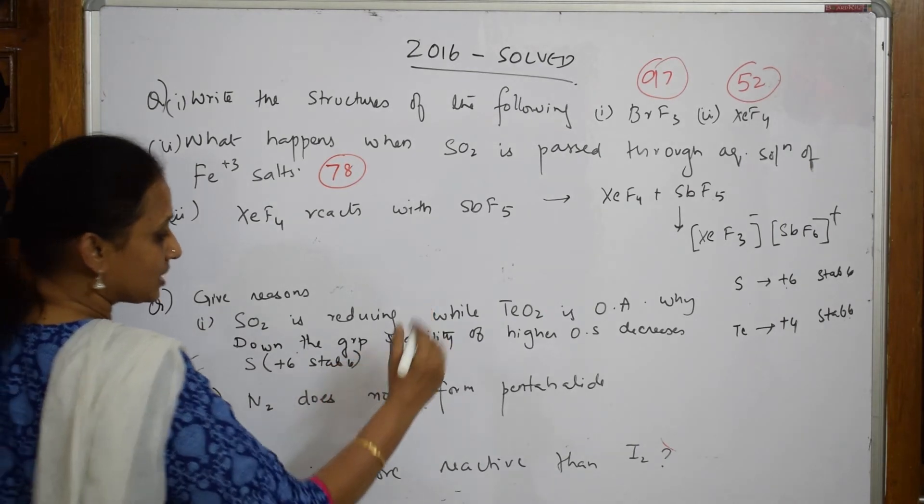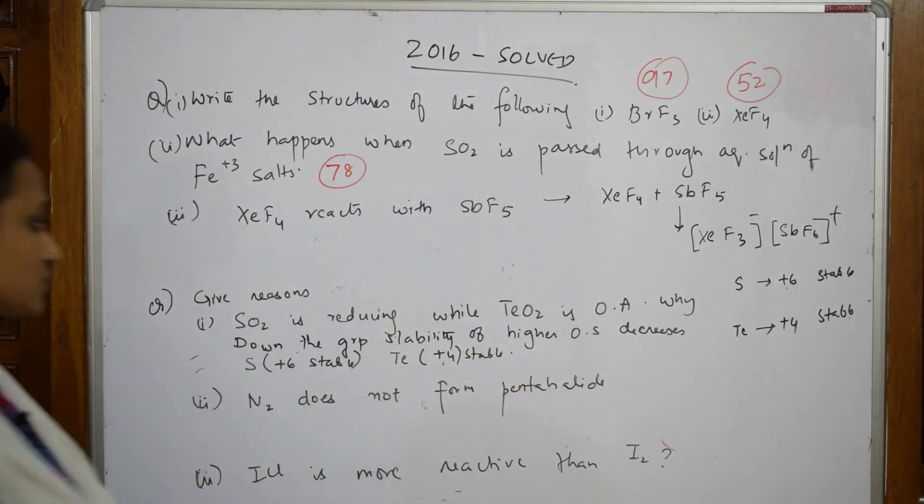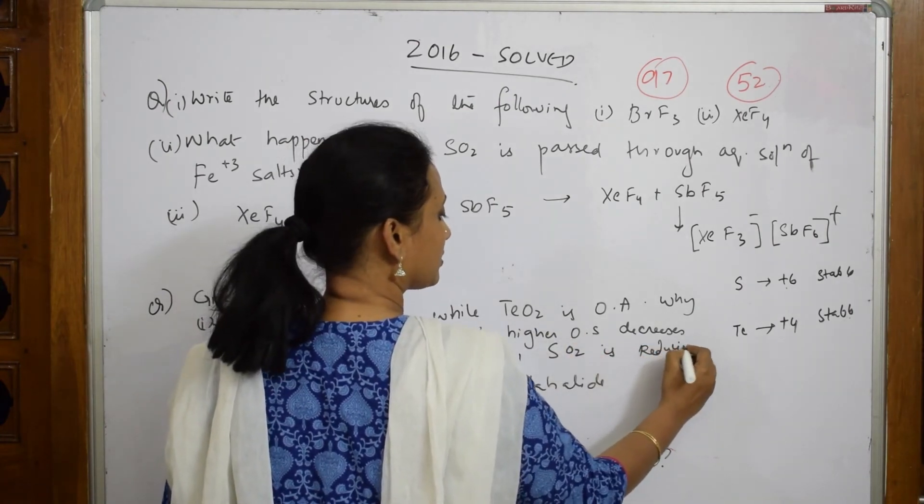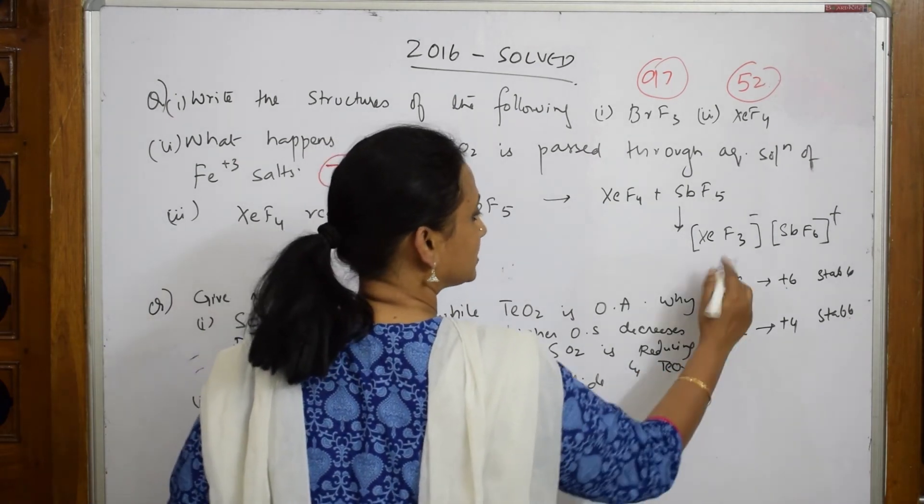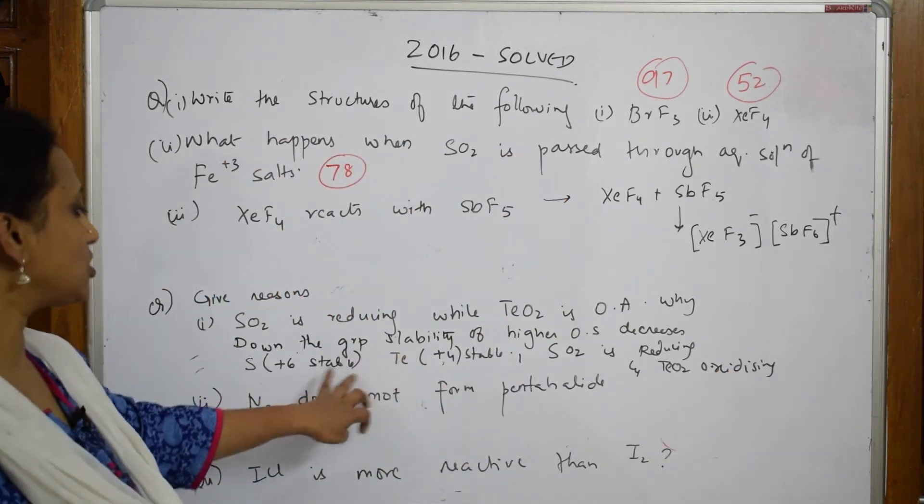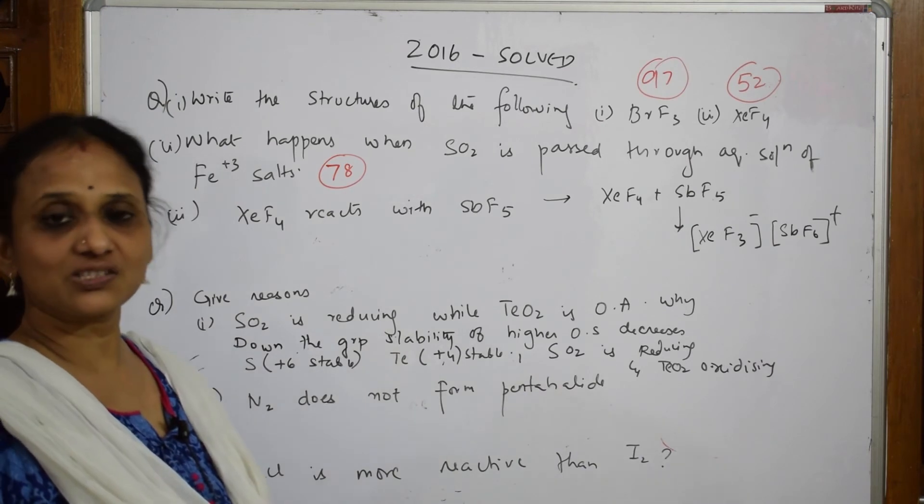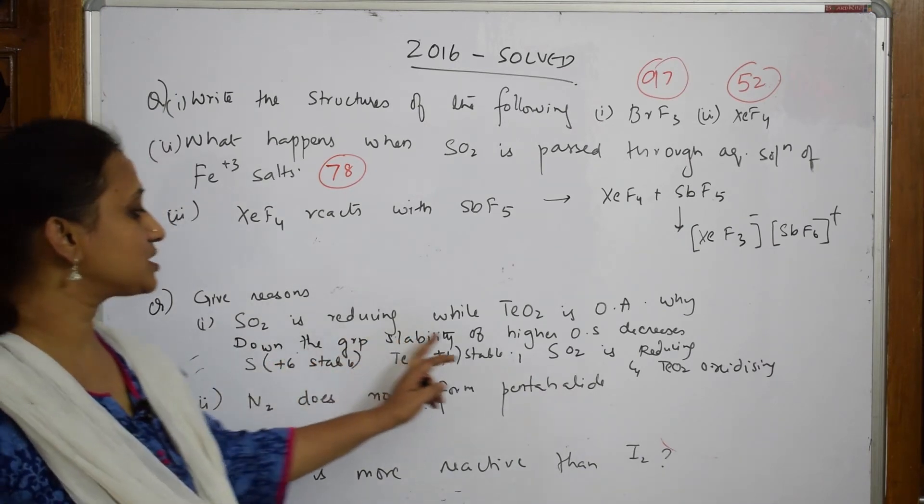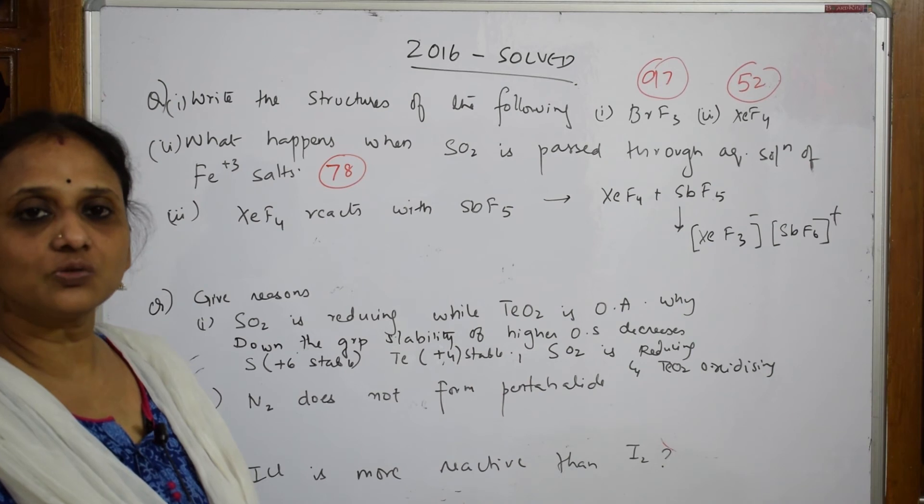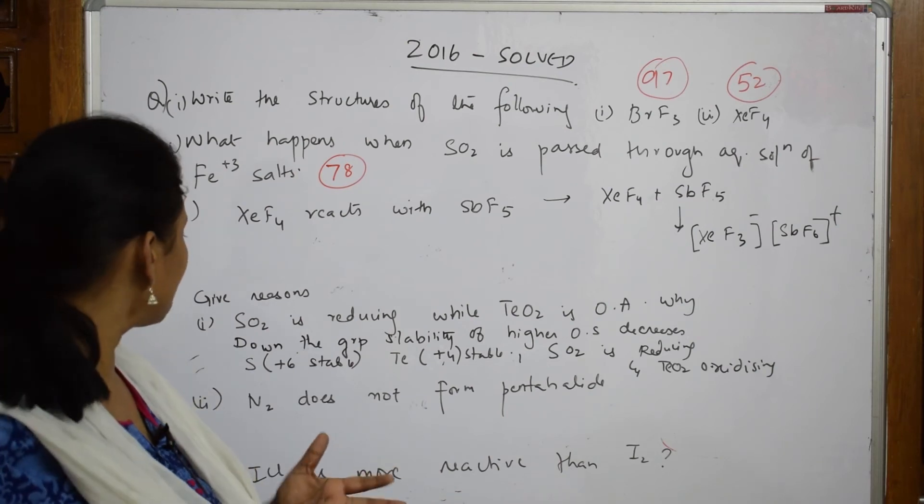This shows that SO2 is reducing and TeO2 is oxidizing. Whichever has higher oxidation state means it has lost electrons—six electrons—so reducing nature. Here, compared to six, four is less, so it is oxidizing. Down the group, stability of higher oxidation state decreases, meaning lower oxidation states are more stable. It will not tend to lose electrons, so it is oxidizing. Remember: higher oxidation state is reducing, lower oxidation state is oxidizing.